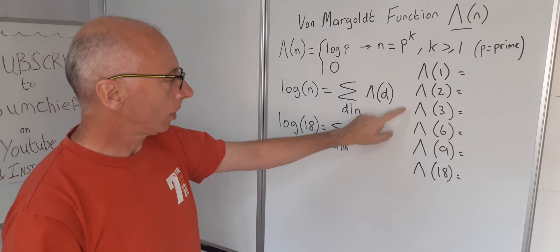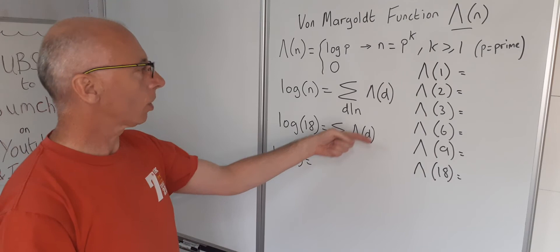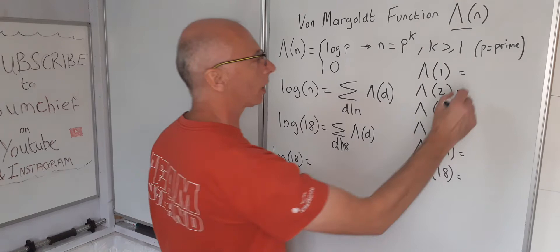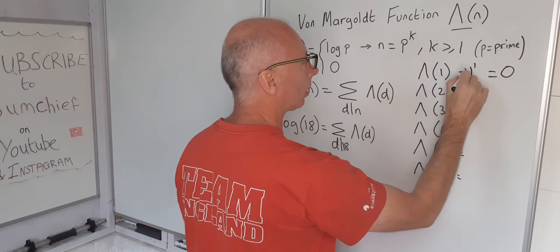We'll evaluate all the von Mangoldt functions for each of the divisors and then we'll sum them up. So log of 18 hopefully it's going to give us our answer. So that is how we're going to sum them up. Von Mangoldt function for 1, well 1 is 1 to the power of 1. 1 is not a prime number, so if we haven't got a prime number take the value 0.